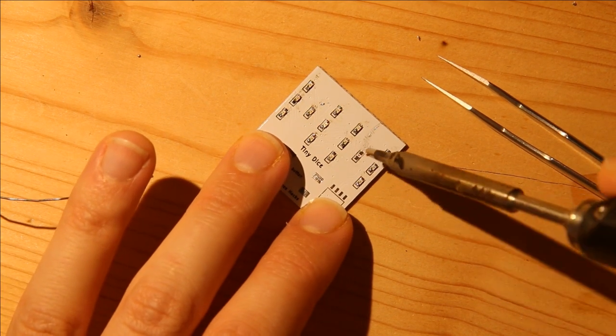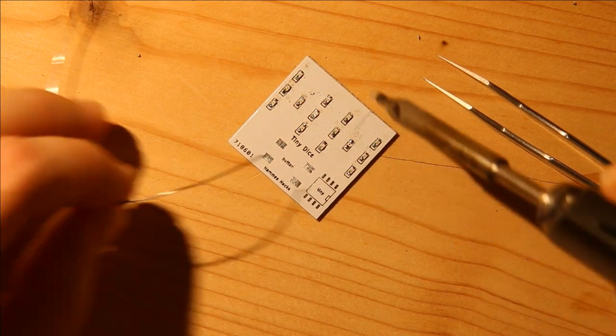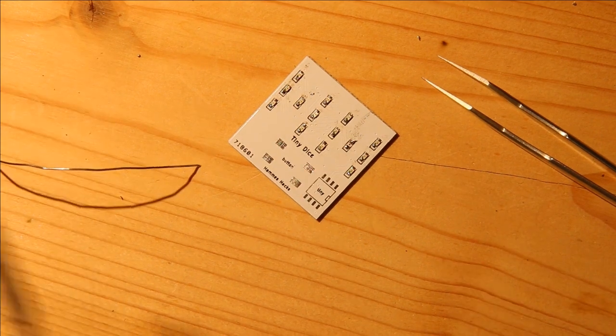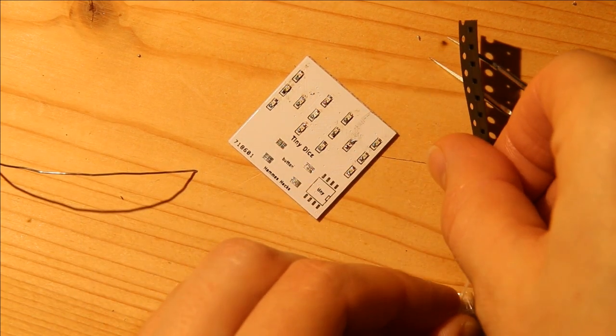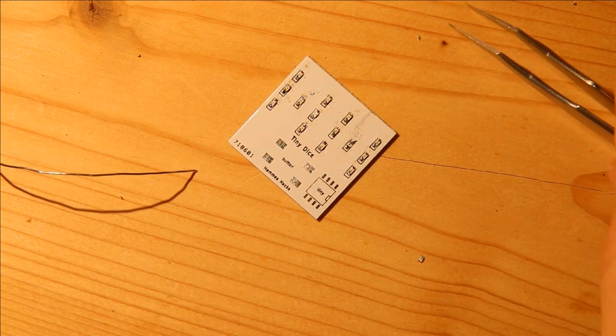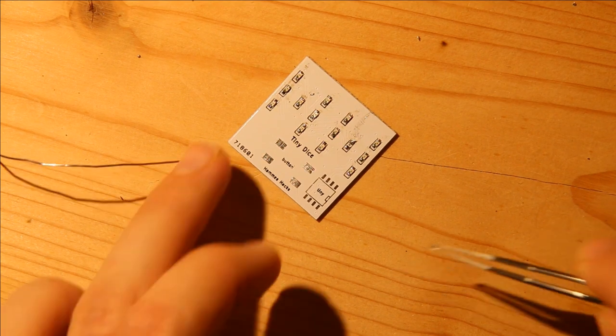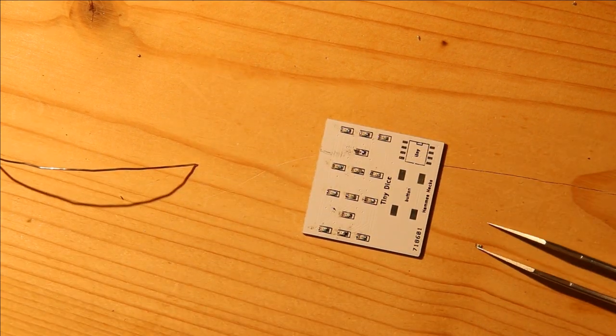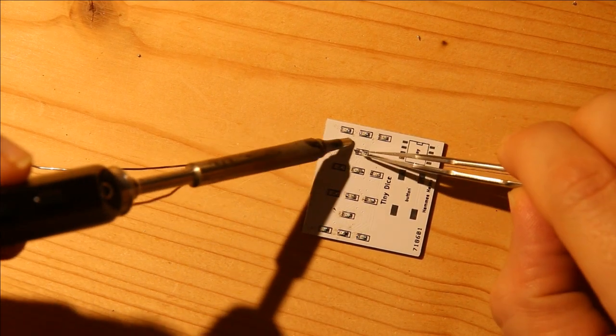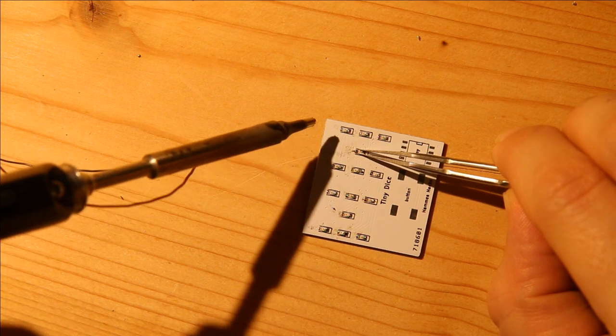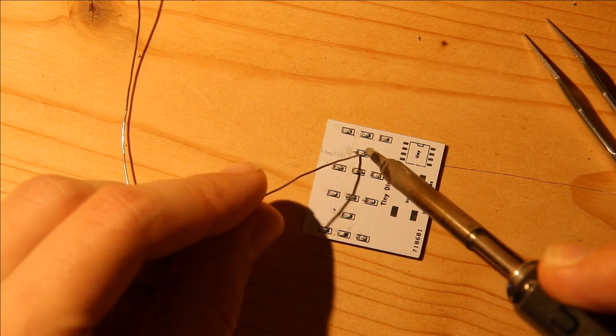So I'm going to try and remove as much solder from these pads as possible. I'm going to add a little bit here, get a new LED, and then solder the other side.